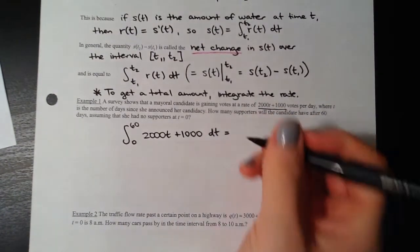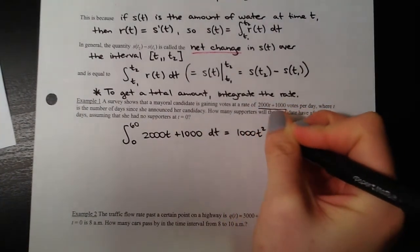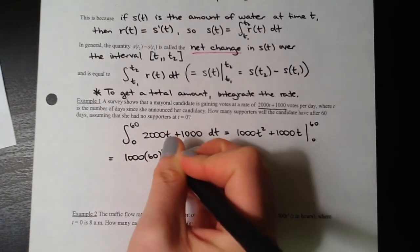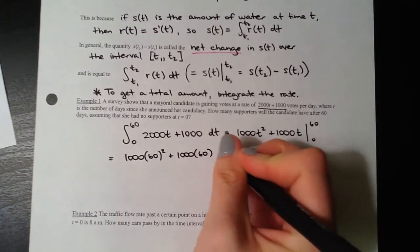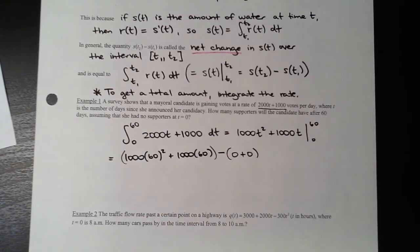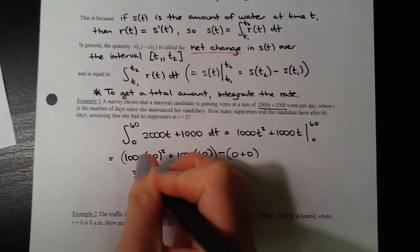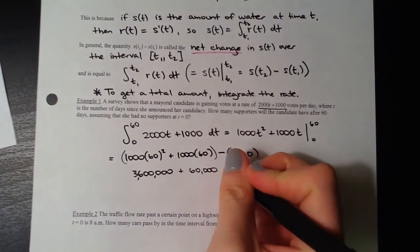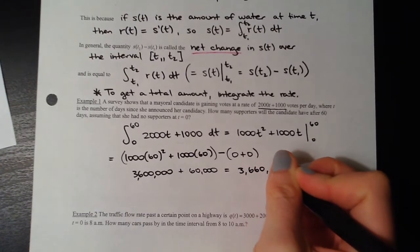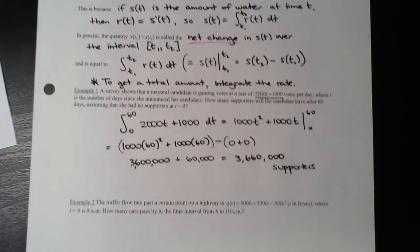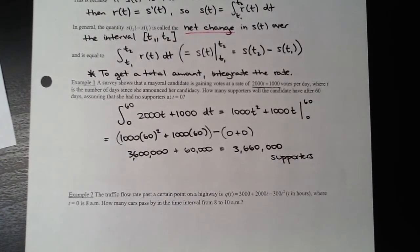Using the First Fundamental Theorem: the antiderivative is 1000T² plus 1000T, evaluated from 0 to 60. Plugging in 60: 1000 times 3600 plus 1000 times 60, minus zero. That gives 3,600,000 plus 60,000 equals 3,660,000 supporters. Always include units. That is the net change in supporters from zero to 60 based on the rate at which she's gaining supporters.